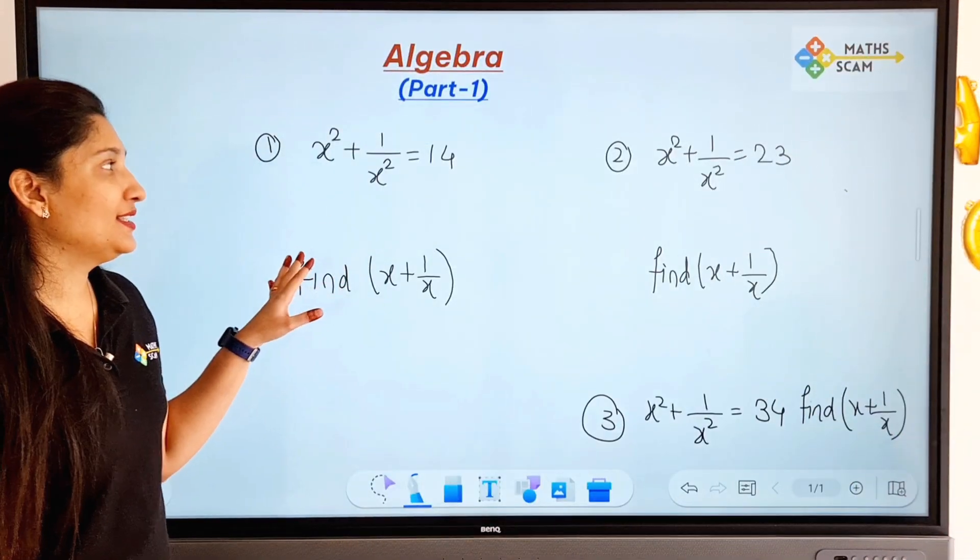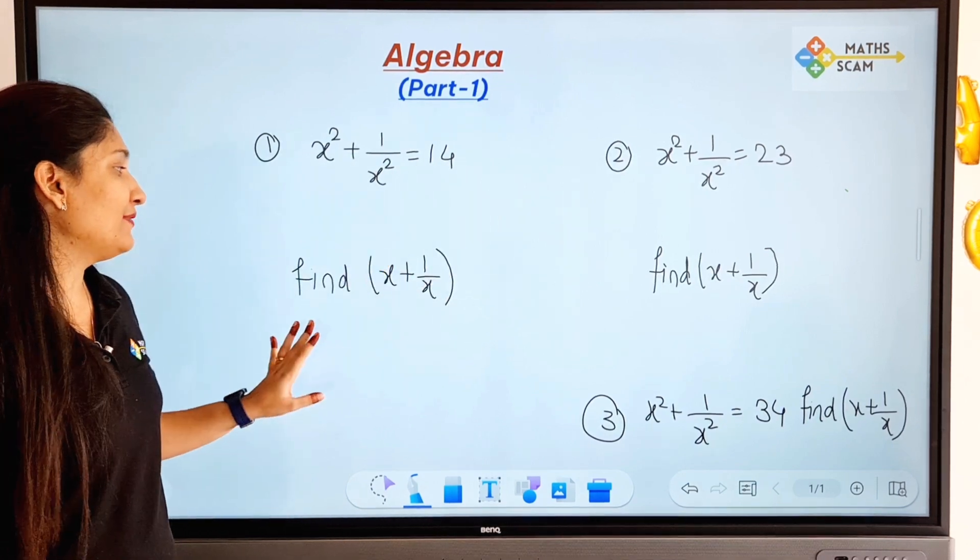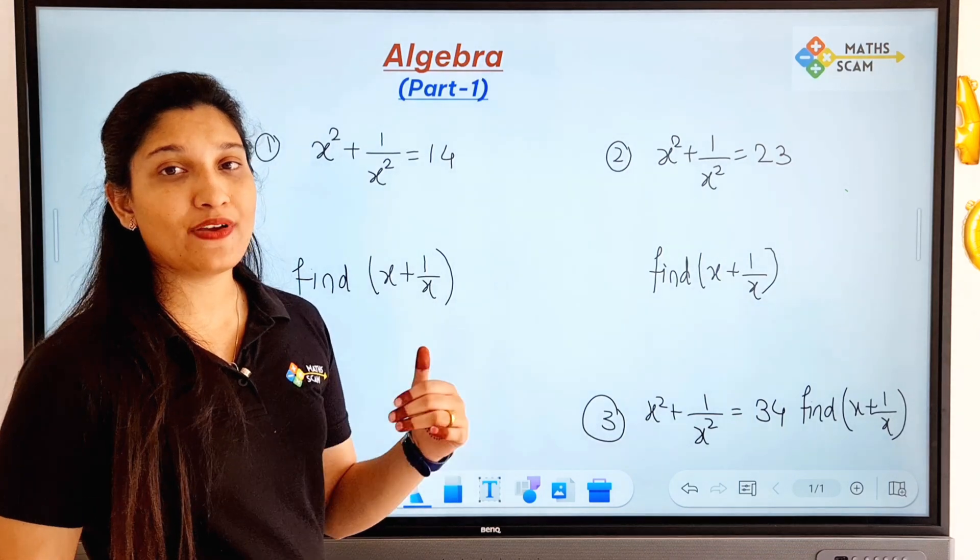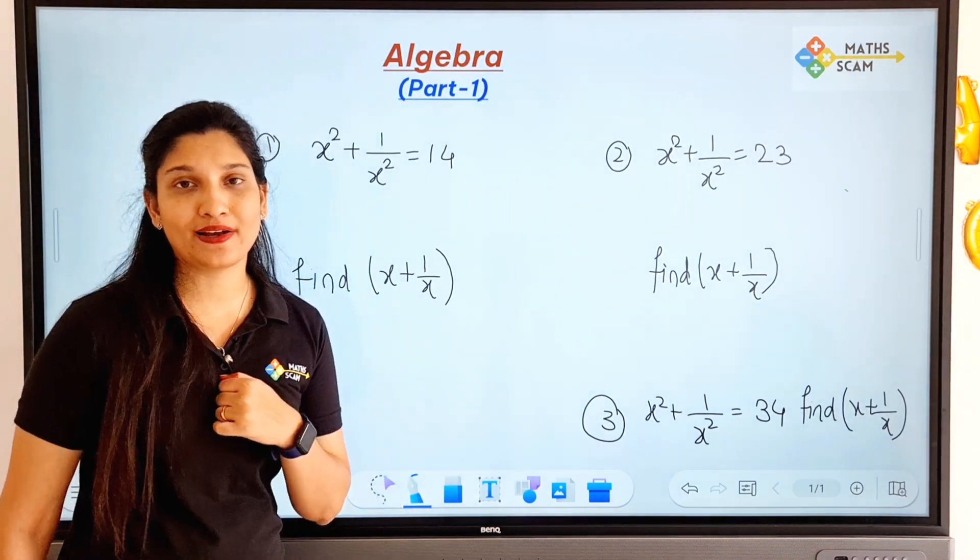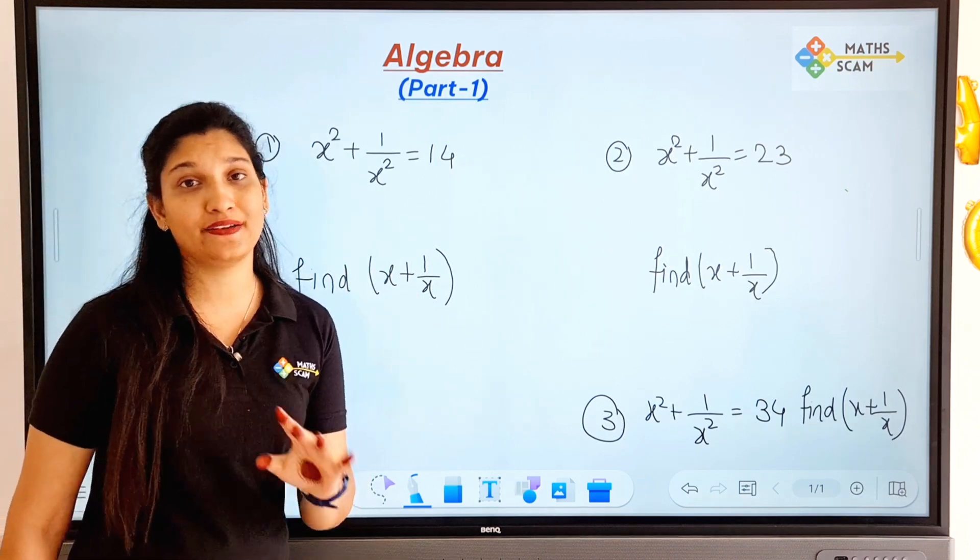So here you can see the question. First question is x² + 1/x² = 14 and we have to find out x + 1/x. So you have to find it out. Here we have square, here we have without square, that is the difference.